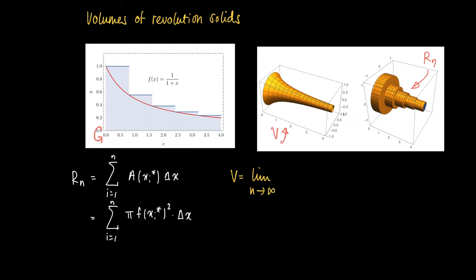Now the volume of the revolution solid we get by taking the limit as n goes to infinity. If we look closely at the terms within the sum Rn, then basically we are integrating with respect to the function π f(x)² over the interval [a,b].